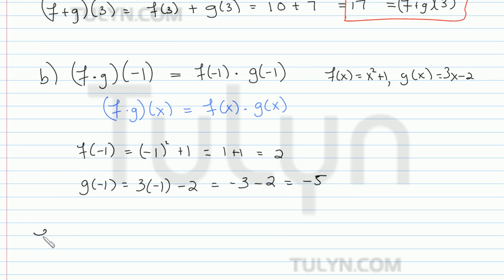So now, f times g of negative 1 is going to be f of negative 1 times g of negative 1. Just putting everything together. So that's going to be 2 times negative 5, which is equal to negative 10.